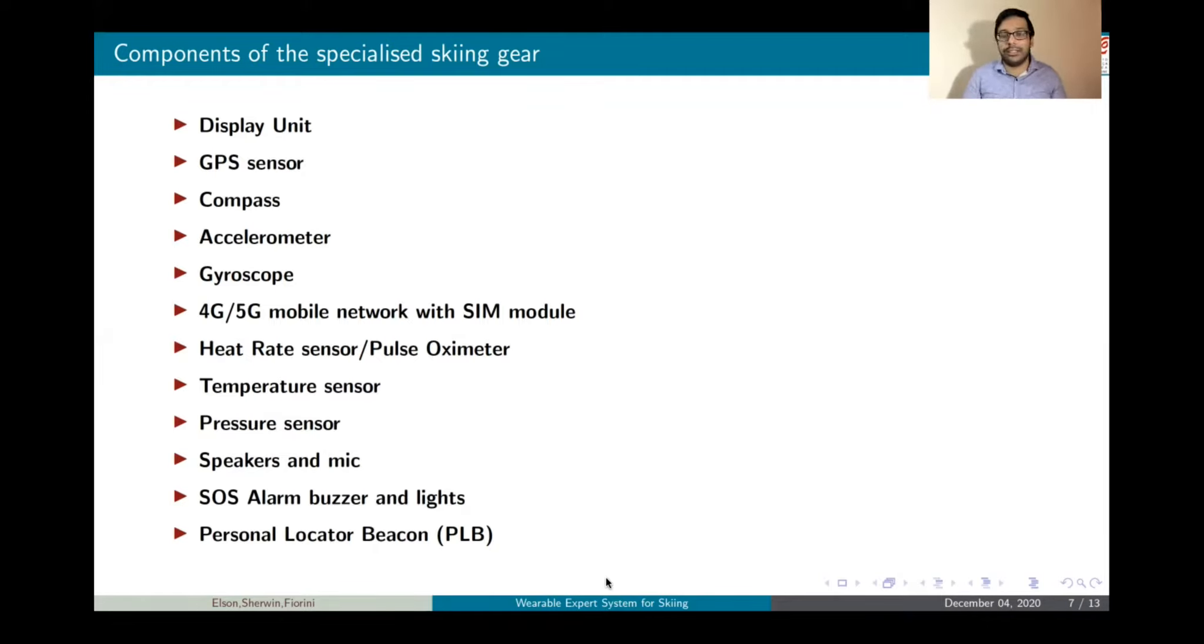We also have a personal locator beacon. The personal locator beacon is sort of the last resort in case the skier is in a very remote location where there is no network, there's no 4G network, there's no internet at all. In this case, if the skier is lost or if there's a mishap that has occurred, the personal locator beacon would help to find out where the location of the skier is precisely so that the skier can be rescued as soon as possible or the skier can be guided back to the location.